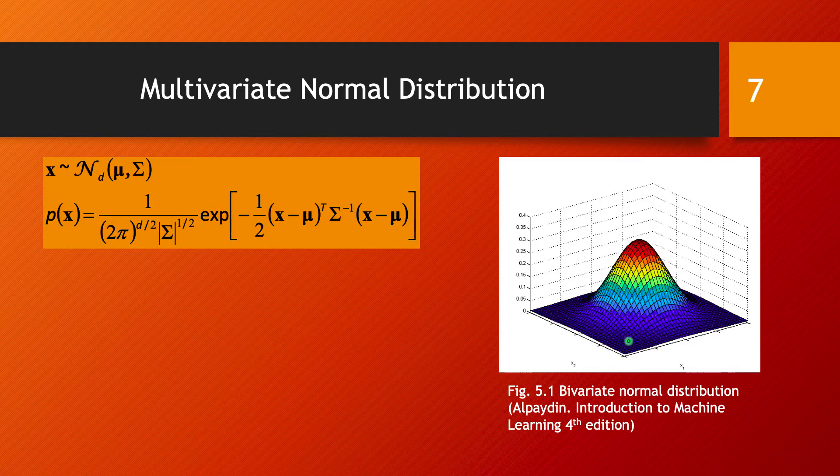It's important to realize that in the case of a multivariate normal distribution, each one of the d components is going to be normally distributed — it's going to have a univariate normal distribution. But be careful because the reverse is not true. Even though you might have a number of normal distributions, putting them together in a vector does not make it a multivariate normal distribution.